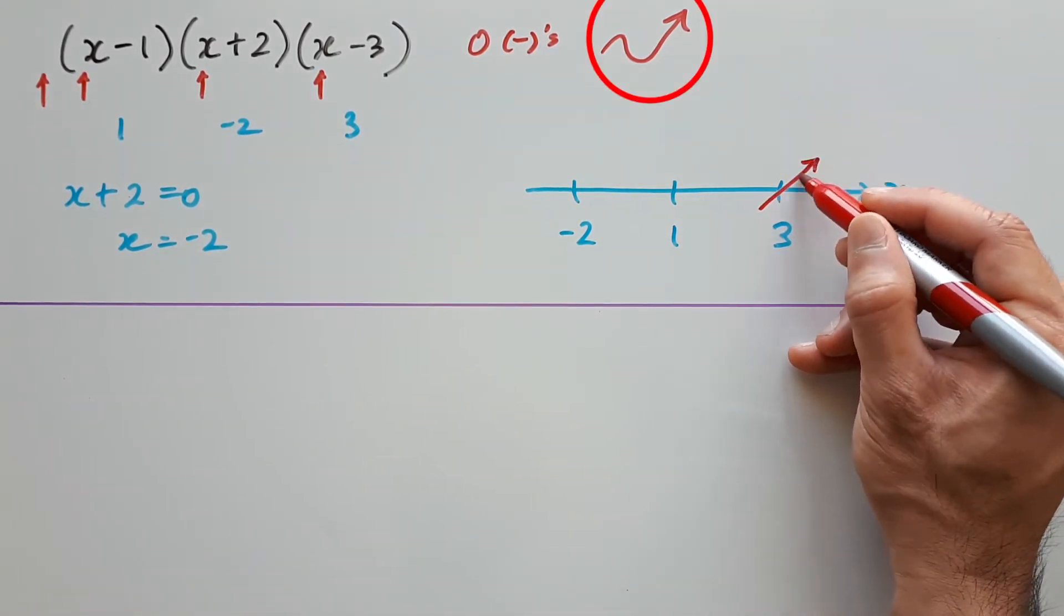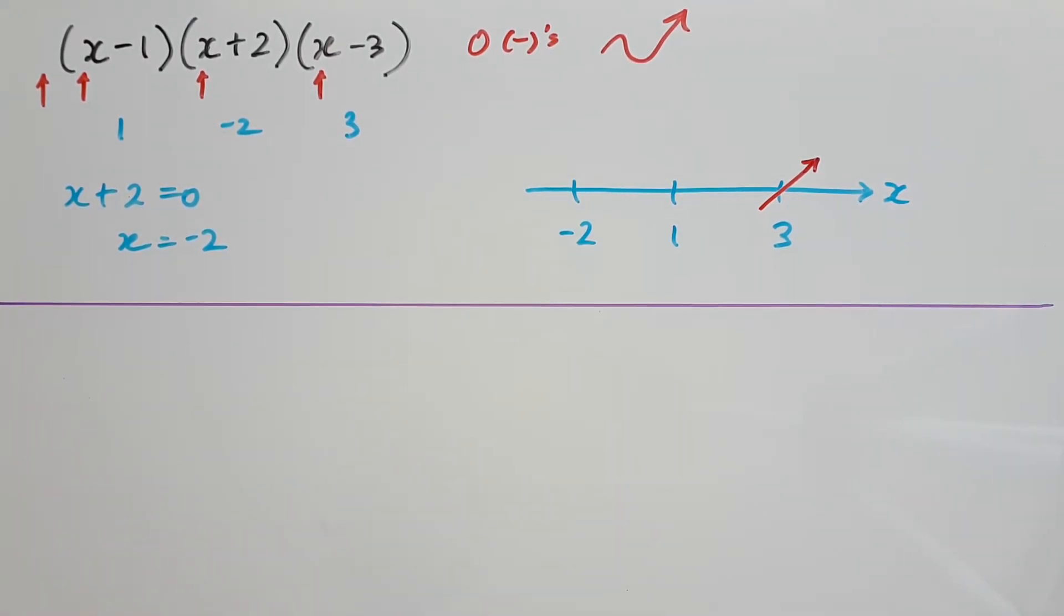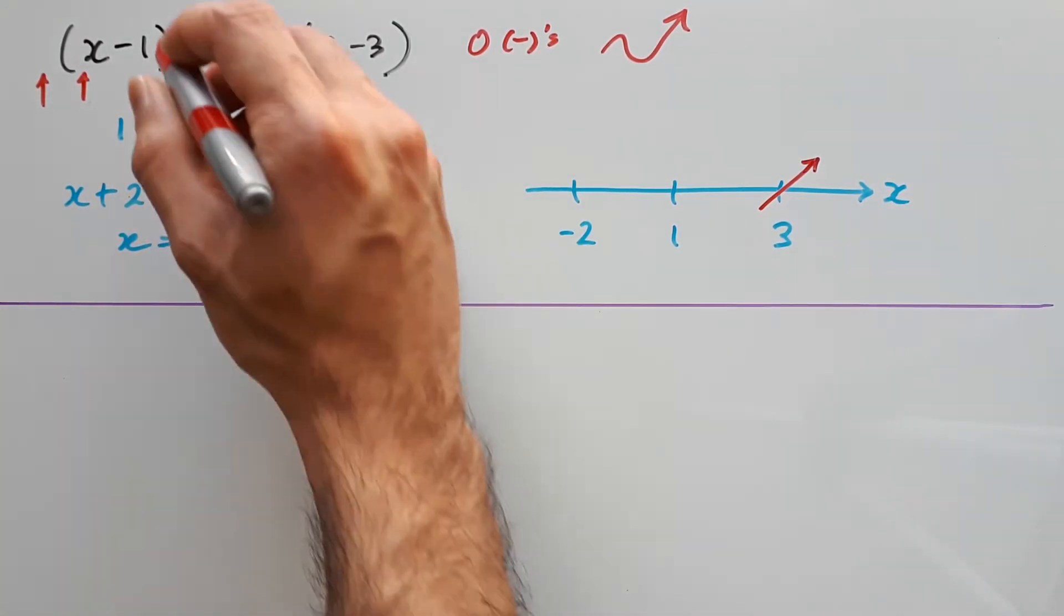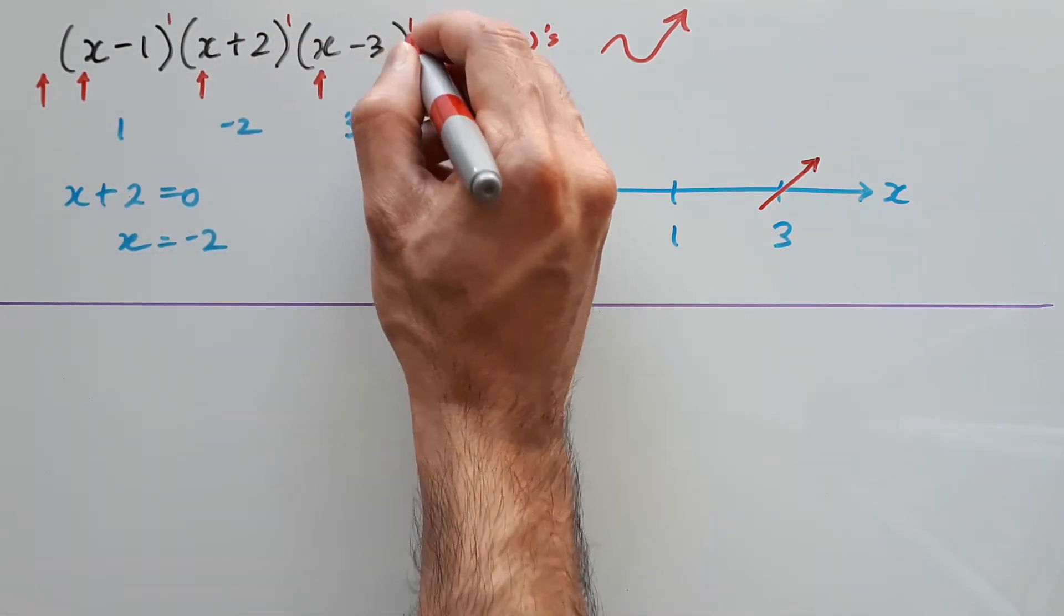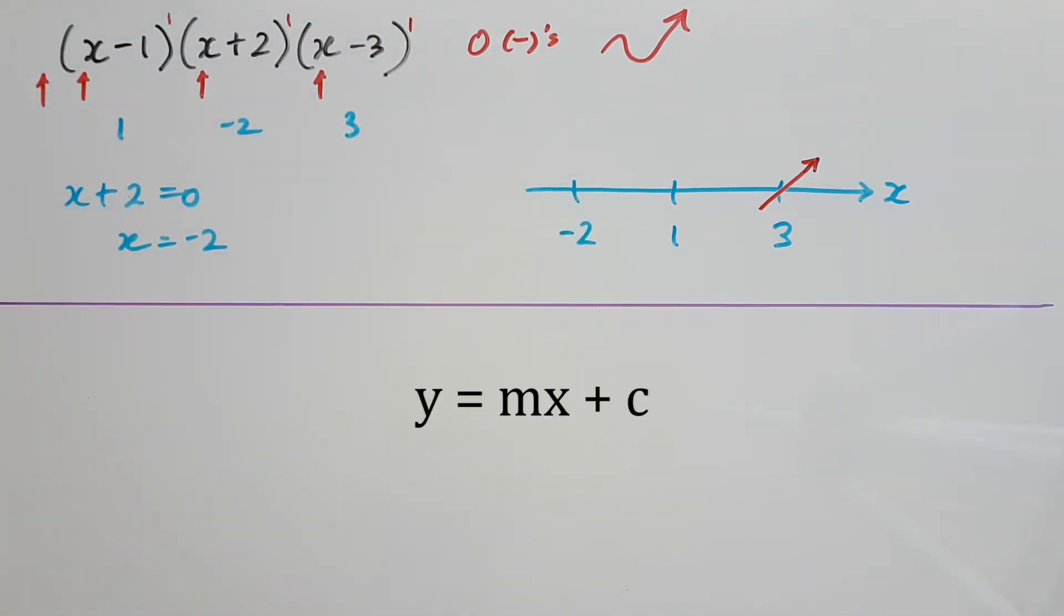And so we draw a straight line through 3, going upwards. The reason they are straight is because each factor here is only repeated once. And each factor looks like y equals mx plus c, which is a straight line. From here all you need to do is work backwards to figure out what is happening at 1 and negative 2. In order to connect to the segment we just drew, the segment going through 1 needs to go straight downwards, and the one going through negative 2 needs to go straight upwards. The final step is to just connect them up. And now we have our graph.